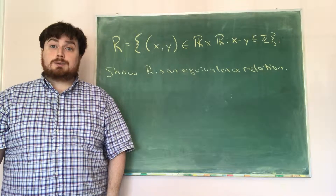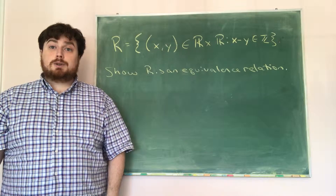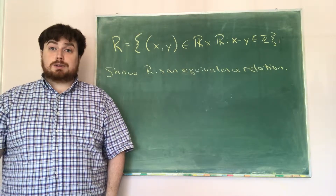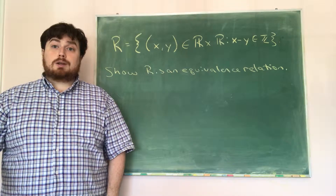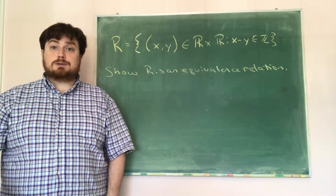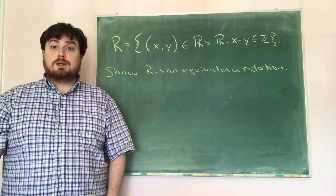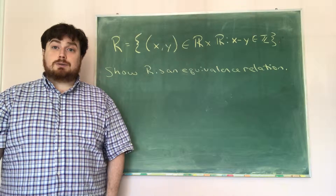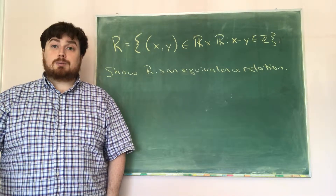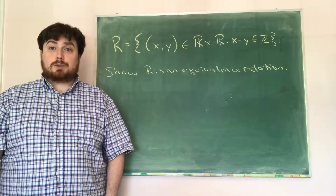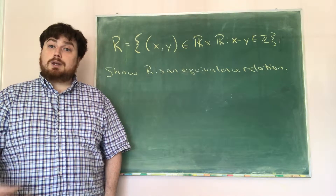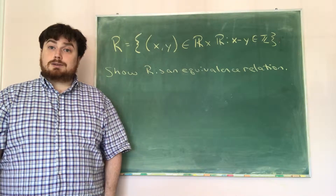What we want to do today is show that the given relation is indeed an equivalence relation. That is, we want to show that it is reflexive, symmetric, and transitive. After that, we want to find the equivalence classes and determine what the partition of the real numbers looks like for the given equivalence relation.